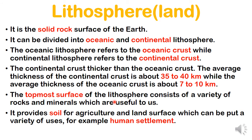The topmost surface of the lithosphere consists of a variety of rocks and minerals which are useful to us. If the topmost layer doesn't have minerals, crops and plants cannot grow, and that is where our food comes from. The soil is used for agriculture, and land is used for many things including human settlement. Lithosphere is a very important part for human settlement.